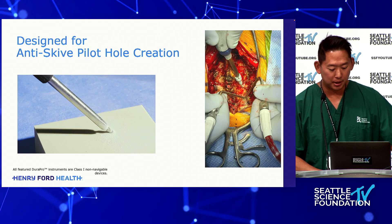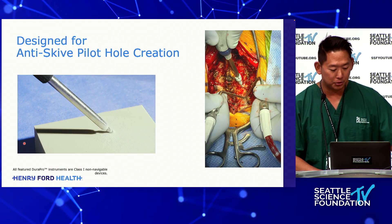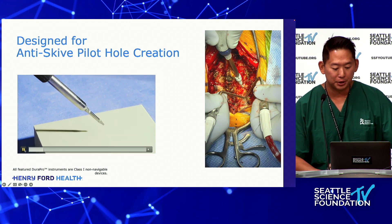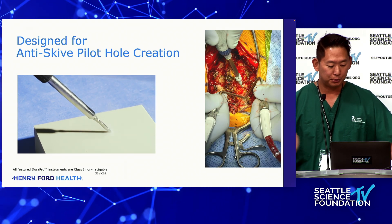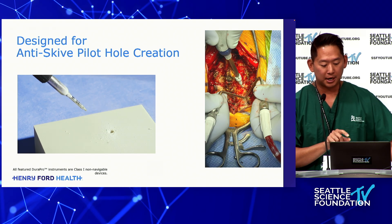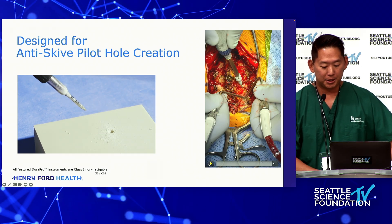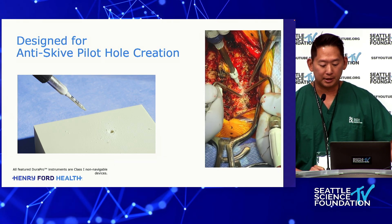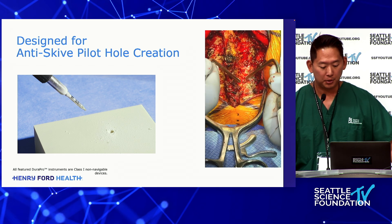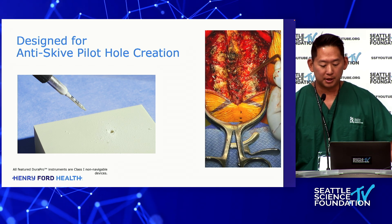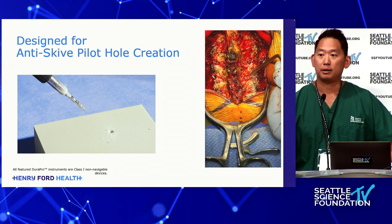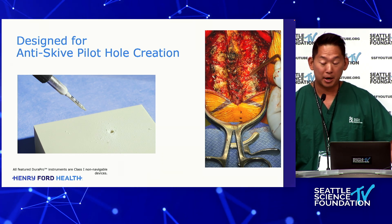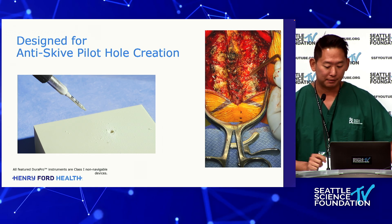The last feature — and I know this is not necessarily germane to MIS surgery since you don't really create a pilot hole, you're usually doing a gem sheet with navigation — but if you have to create an open pilot hole, there's an anti-skive tip that can be used. You can go quite obliquely at a vertical surface and not worry about skiving off. I think this has more application in robotics, where skiving is probably the biggest enemy in terms of accurate screw placement.